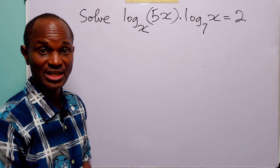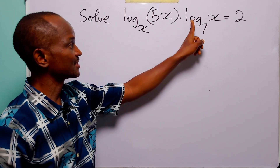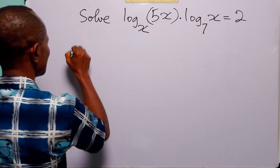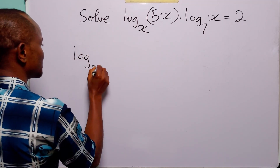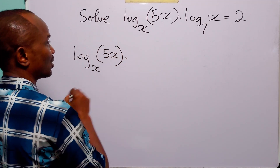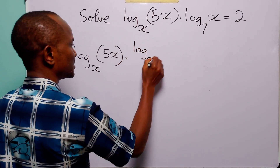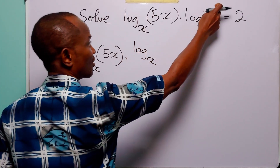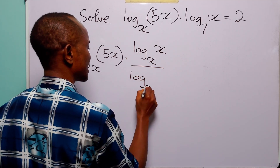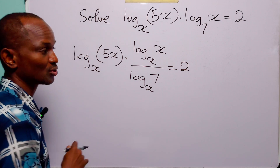Still on the topic of changing bases, we can even work in base x. So let us change the first term from base 7 to base x. When we do that, this equation becomes log base x of 5x, multiplied by log base x of x over log base x of 7, and this is still equal to 2.